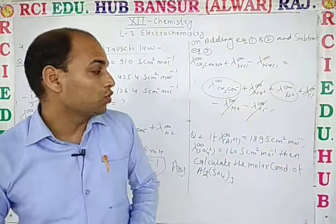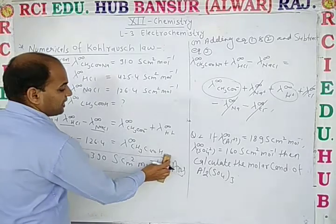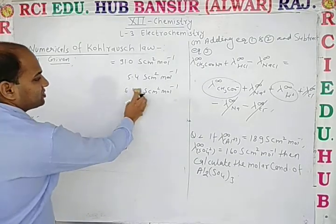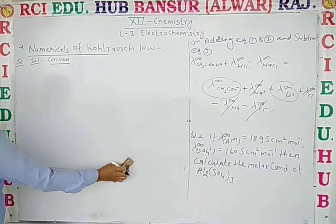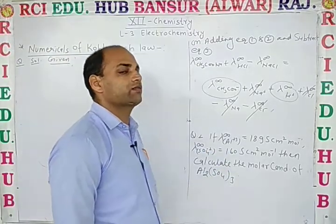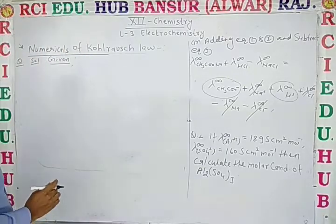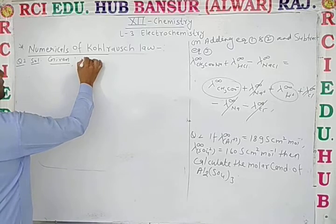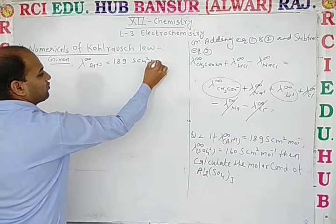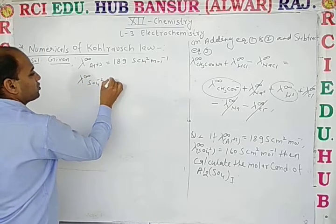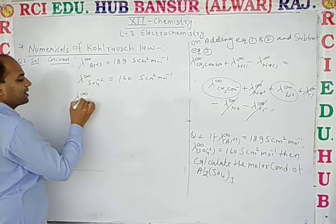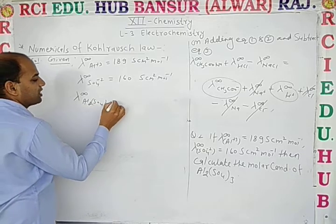Now we move to our second numerical. Given: λ∞(Al³⁺) = 189 cm² mol⁻¹ and λ∞(SO₄²⁻) = 160 cm² mol⁻¹. Calculate the molar conductivity at infinite dilution of Al₂(SO₄)₃.